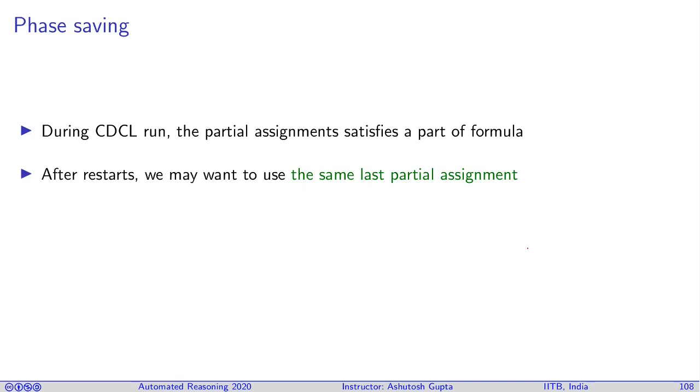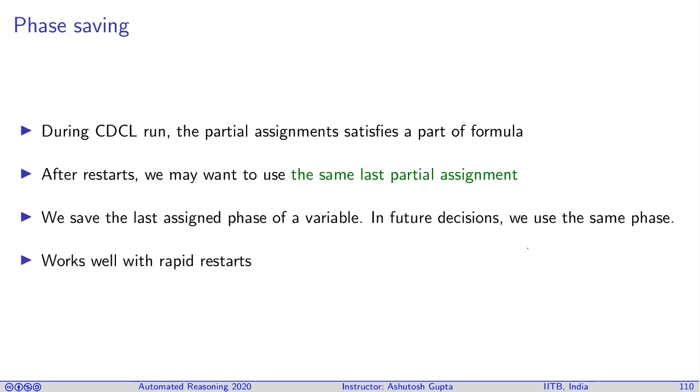At restart, we may want to use the same last partial assignment. And when you have a restart, you say, okay, just go and look at the last time this variable was assigned to false, use the same value of false. Variable ordering may change, but you can use the same sign. This method works well in rapid restarts. When you very dramatically change the assignments, the whole system becomes unstable and very hard to get good results. So phase saving seems to have a positive impact.